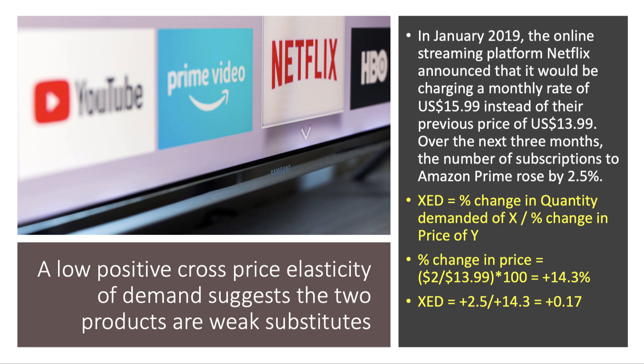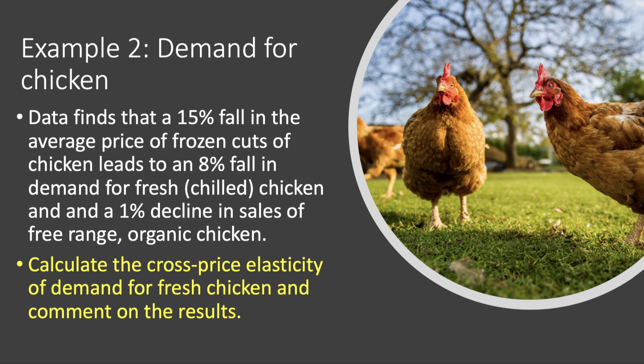Here is our second example: the demand for chickens. Data finds that a 15% fall in the average price of frozen cuts of chicken in supermarkets leads to an 8% fall in the demand for fresh chilled chicken, and a 1% decline in sales of free-range organic chicken. Calculate the cross-price elasticity of demand for fresh chicken, and comment on the results. This is the impact on the demand for fresh chicken following a fall in the price of frozen cuts.